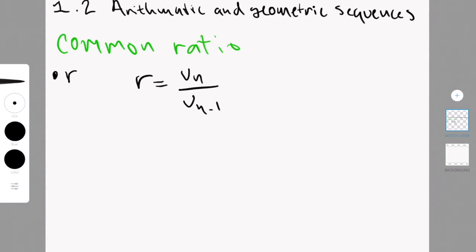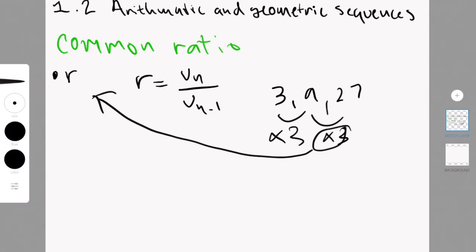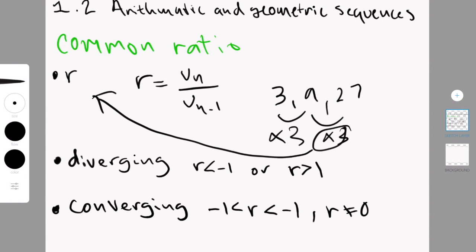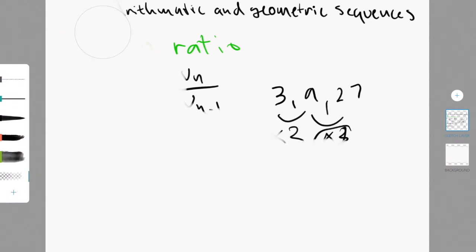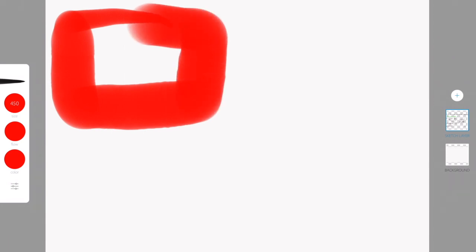Now, if the R, the common ratio, is smaller than negative 1 or bigger than negative 1. The, oh no, I wrote wrong in this. It's not supposed to be negative 1. It's supposed to be a 1. So if the R is smaller than negative 1 or bigger than 1, the sequence is diverging. When writing an equation for the patterns you have found in a geometric sequence, you use the format UN equals U1 times R to the power of n minus 1. So this would be the first term times the common ratio to the power of the term that you're looking for minus 1, so the previous term. So that was actually it for 1.2 as well.